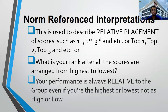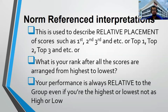Your performance is always relative to the group, even if you're the highest or lowest — not necessarily a high or low performance. For example, even if you get a score of 97 out of 100 and you get the lowest score, 97 out of 100 is not a low performance. Or you get 3 out of 10 and you are the highest score — that is actually a low performance. That is why in norm reference interpretation, your performance is always relative to the group.